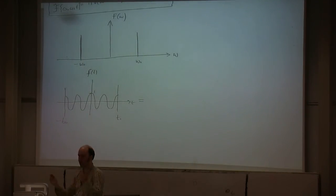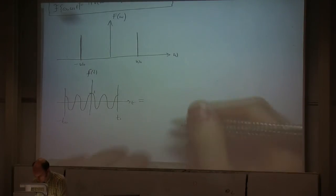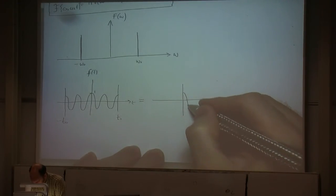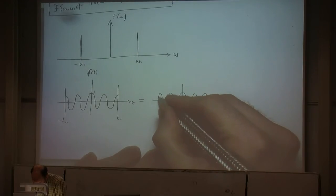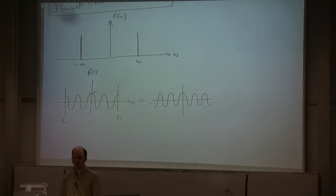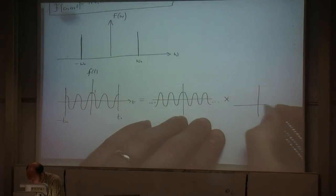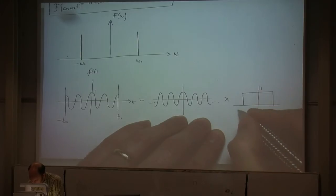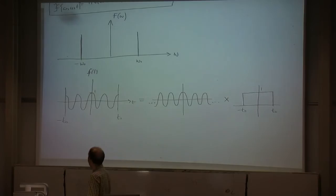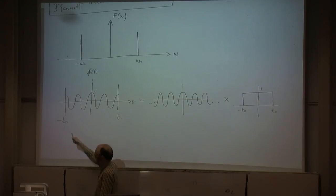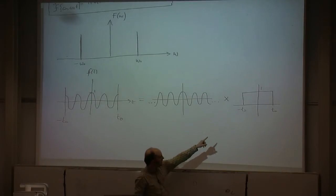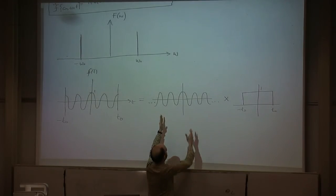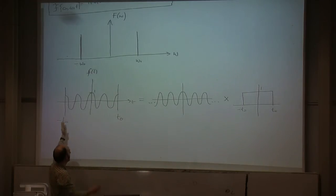We can separate this into two graphs multiplied together. If we take cosine on its own, it goes on and on — that's an infinite cosine signal. But if we multiply that by a rectangle of height one from minus t-naught to t-naught, then we get a signal limited between minus t-naught and t-naught. Wherever those two things are multiplied together, you get the bit in the middle multiplied by one; everything else is multiplied by zero, so it's nothing. That gives us a finite signal.